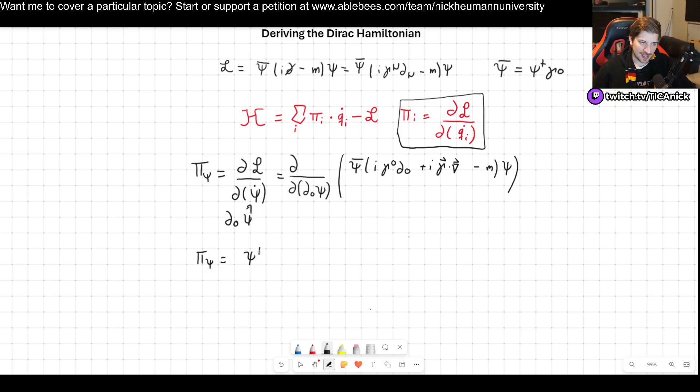So we got that our pi psi is going to be psi bar, which is psi dagger gamma 0 times i gamma 0. Now we can put the i in front. And what is gamma 0 times gamma 0? That is simply the unit matrix. So that's simply going to be i psi dagger.